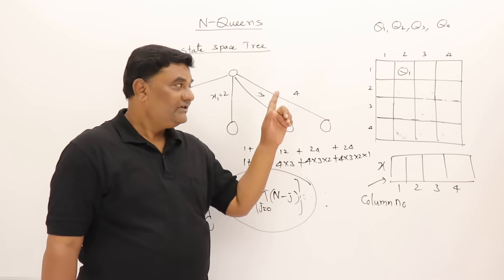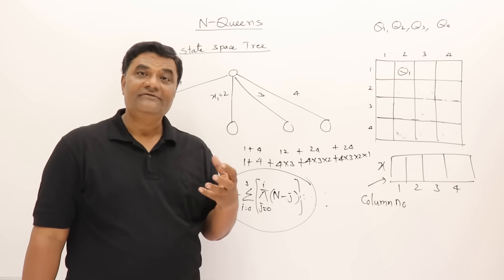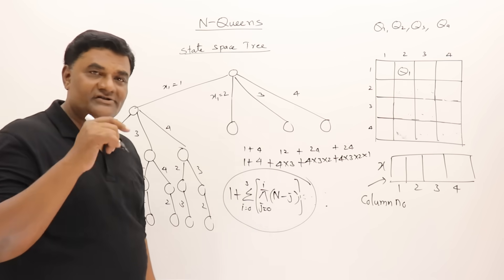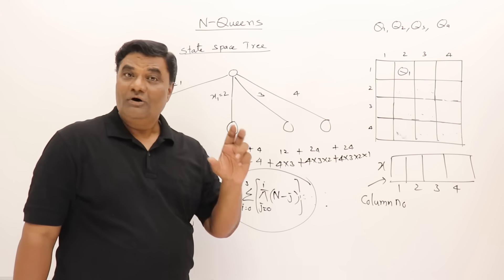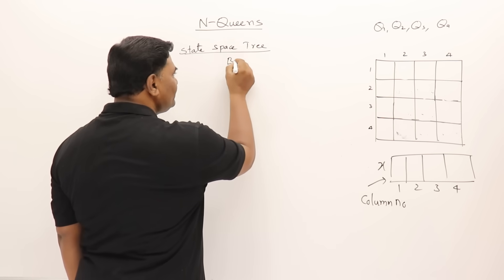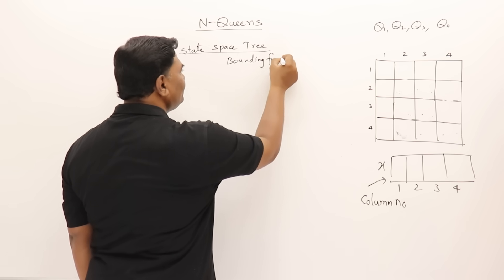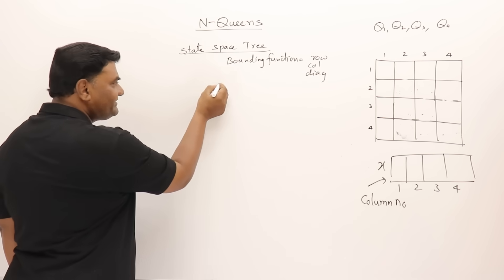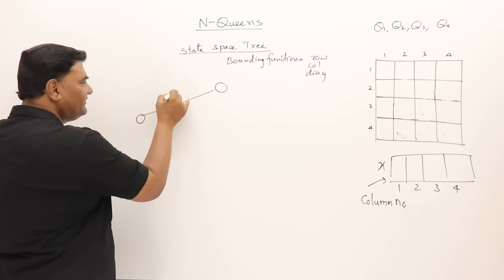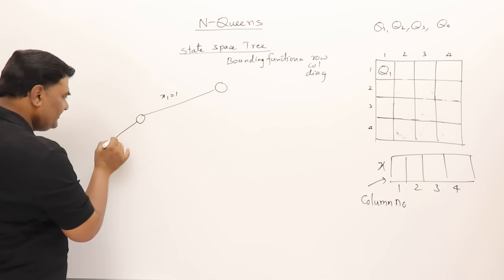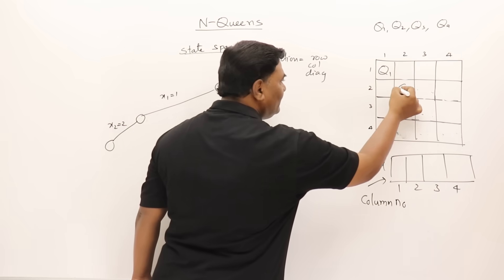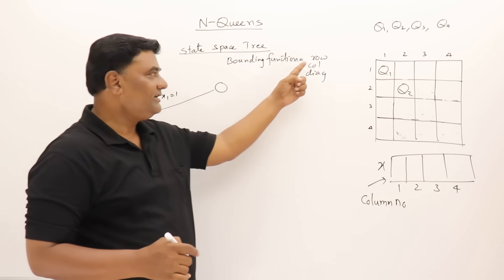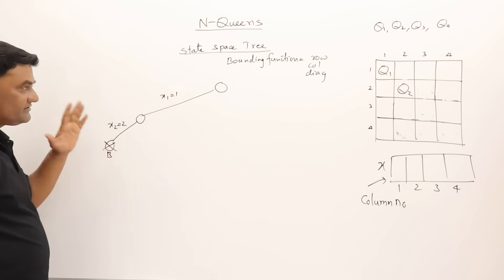Now we solve the problem by applying the bounding function, which is the condition that queens must not be in the same row, same column, or same diagonal. We redraw the tree applying this condition. Queen one in first column, then queen two in second column — they are under attack, so we kill this node by applying the bounding function. This node has violated the condition.